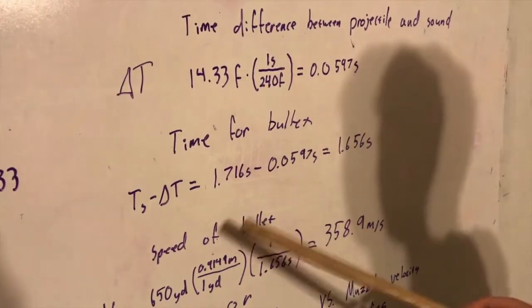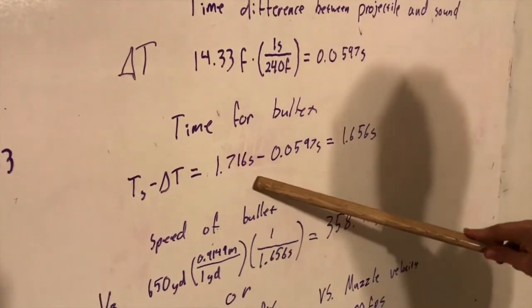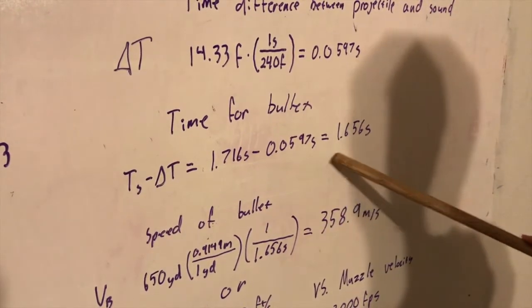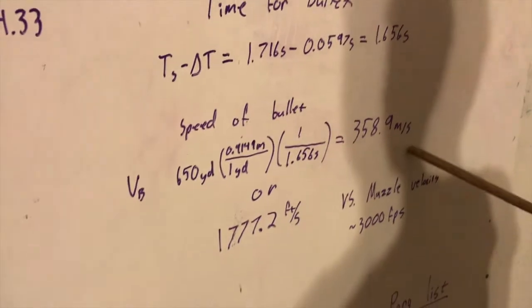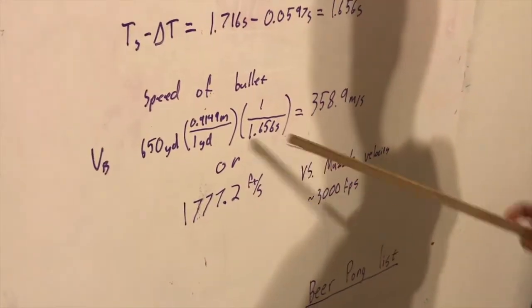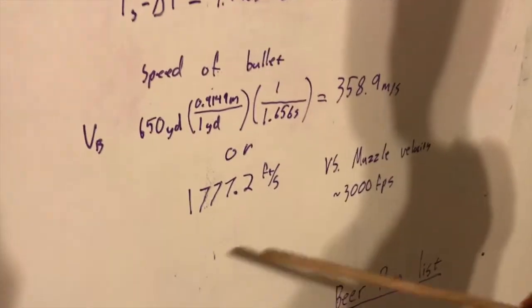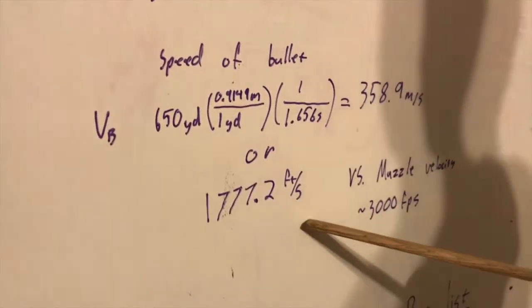...is our time for sound minus the time difference, which is 1.656 seconds. We can easily calculate the speed using our range and the time to get 358.9 meters per second or approximately 1177 feet per second.